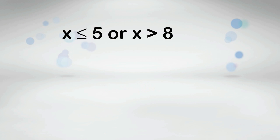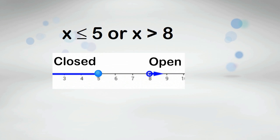x is less than or equal to 5 or x is greater than 8. This inequality will point in two different directions because it uses OR.